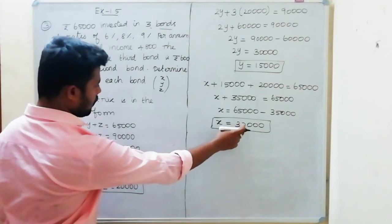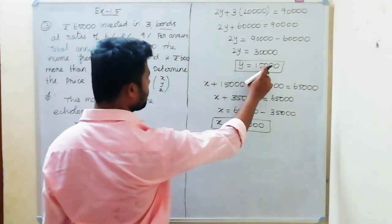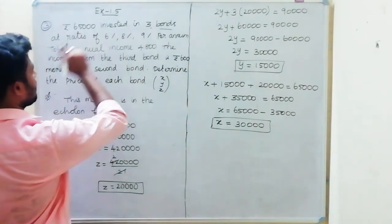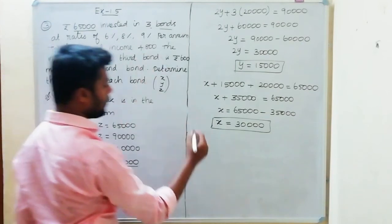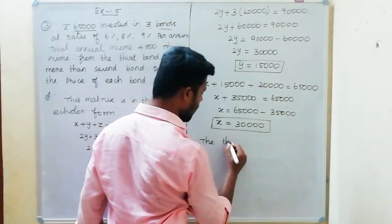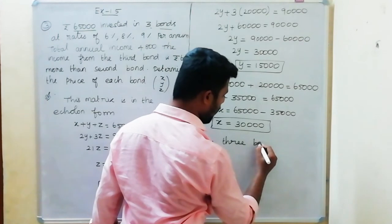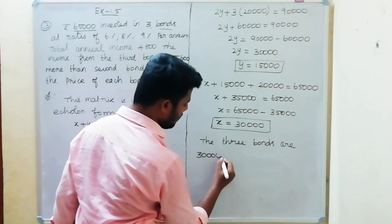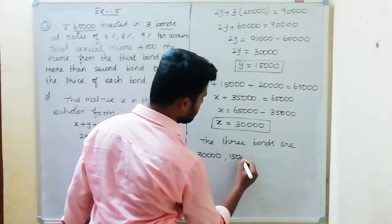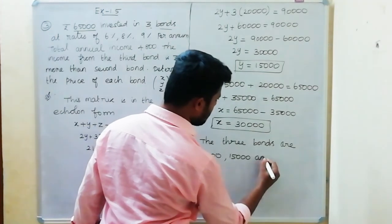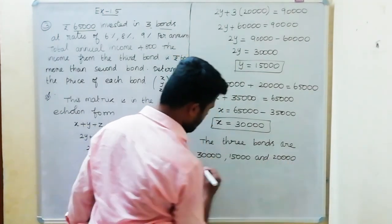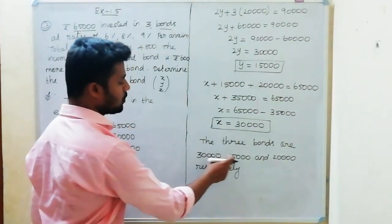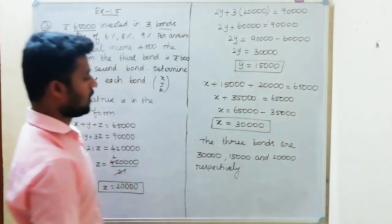Verifying: 30,000 plus 15,000 plus 20,000 equals 65,000. Correct. Therefore, the three bonds are 30,000, 15,000, and 20,000 respectively.